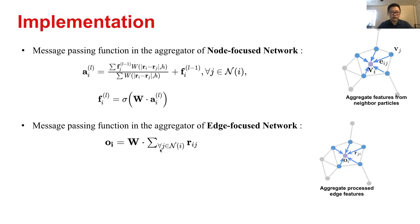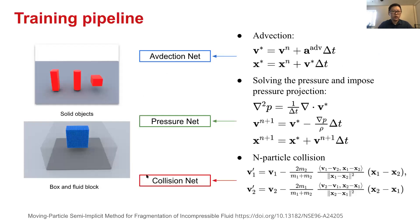As for the message passing function in the aggregator of edge-focused network, we just use a summation. Summation is very efficient and also permutation invariant. We sum up all the edge embedding and apply a linear transformation to shrink the dimension to a desirable dimension. For instance, if the edge embedding is 128 dimension, for prediction we would like to get a vector that is three dimension for velocity. Then we will use a 3 by 128 weight matrix to fulfill the linear transformation.